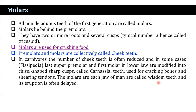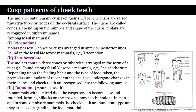The molars located at the rear of each jaw in humans are called wisdom teeth, and their eruption is often delayed. On the basis of cusp pattern of cheek teeth, several categories are recognized: triconodont, trituberculate, bunodont, lophodont, secodont, selenodont, brachydont, hypsodont, and others.